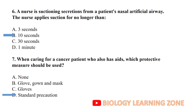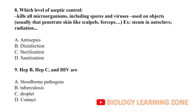Which level of aseptic control kills all microorganisms including spores and viruses, used on objects that penetrate the skin like scalpels and forceps? For example, steam autoclave and radiation — this is sterilization. It is the removal of all types of pathogens including spores, hepatitis B, hepatitis C, and HIV.